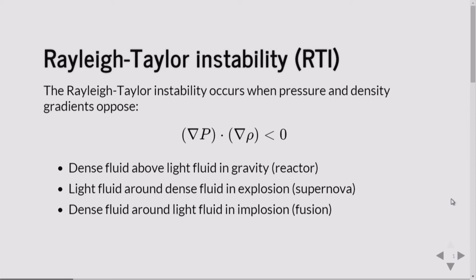The Rayleigh-Taylor instability studies the fall of the dense fluid through the light fluid. It turns out that you can get a very similar situation when you have a light fluid surrounding a dense fluid in an explosion, which is the case during supernova, or alternatively when you have a dense fluid surrounding a lighter fluid in an implosion, as would be the case in inertial confinement fusion.